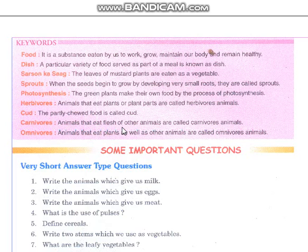Carnivores: animals that eat the flesh of other animals are called carnivores. Omnivores: animals that eat both plants as well as other animals are called omnivores.